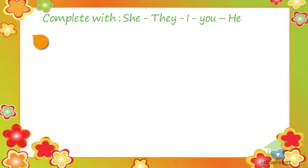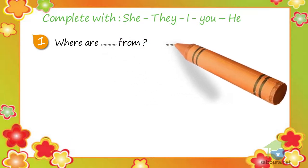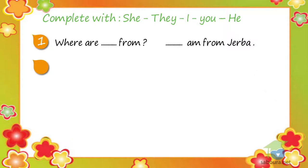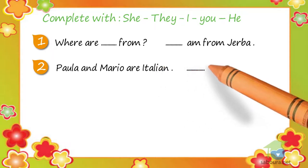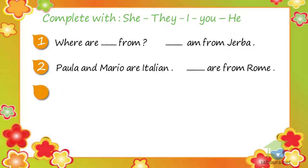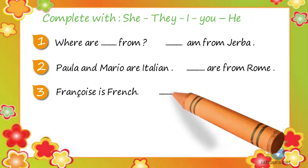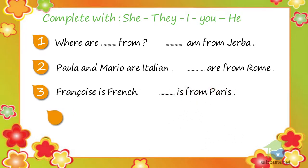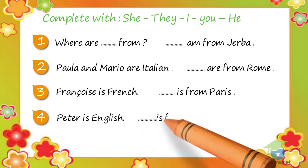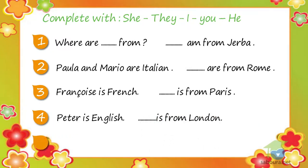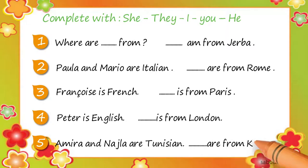1. Where are you from? I'm from Gerber. 2. Paola and Mario are Italian. They are from Rome. 3. Françoise is French. She is from Paris. 4. Peter is English. He is from London. 5. Amira and Najla are Tunisian. They are from Catherine.